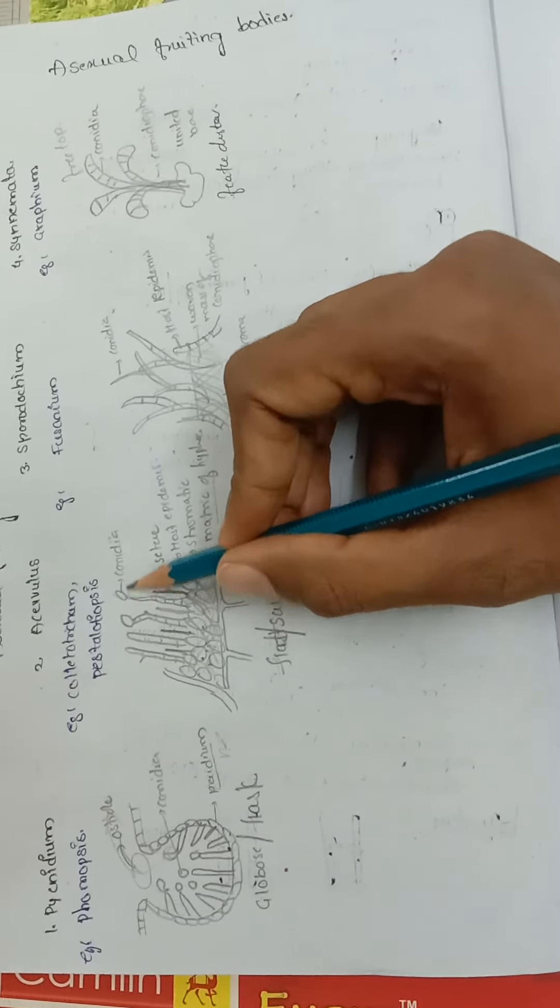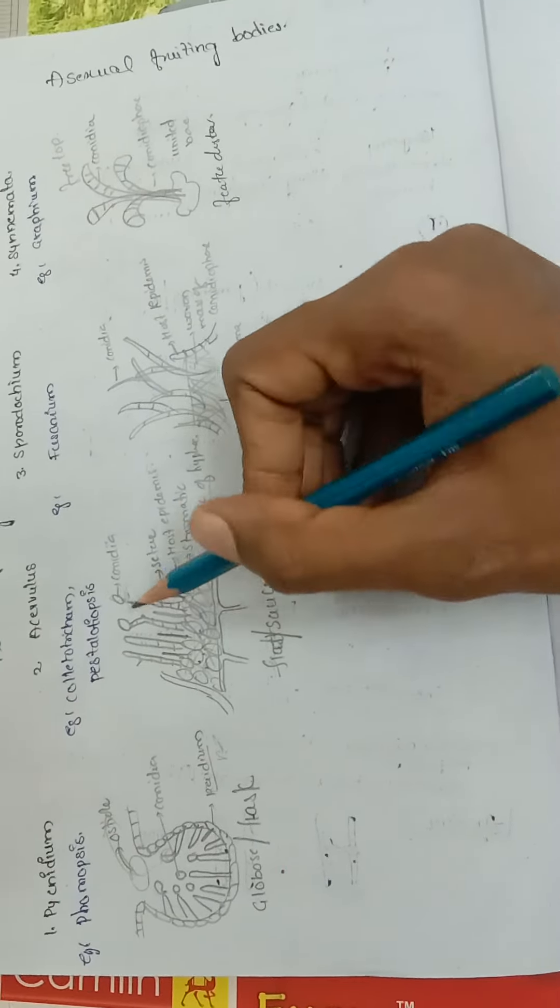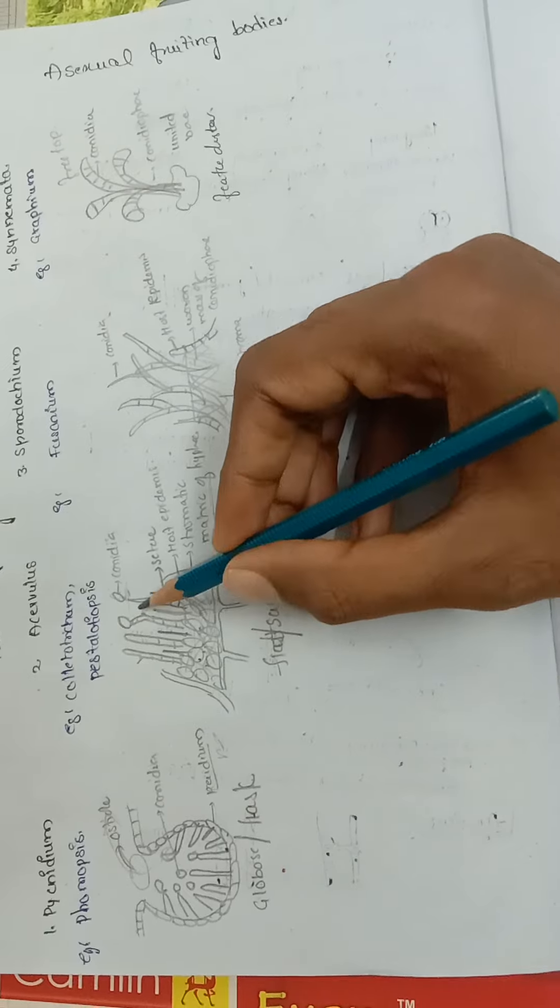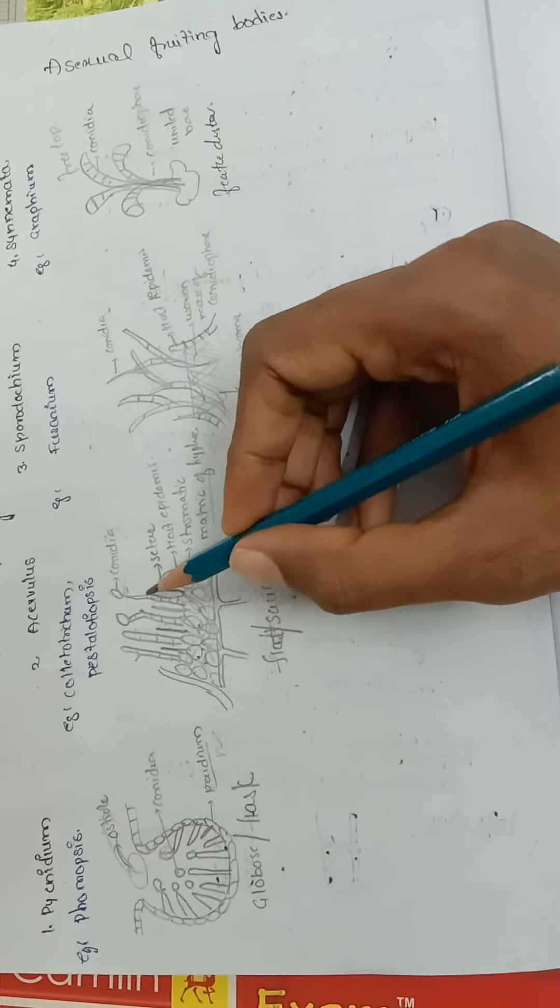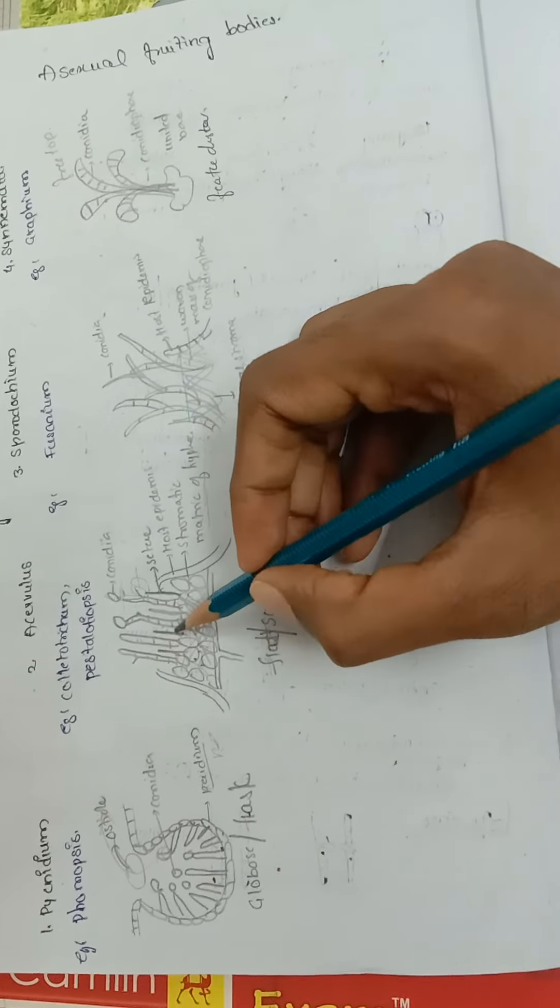When the conidia is detached from the conidiophore, it has a scar. Sometimes it is straight and sometimes it is curved due to the detachment of conidia and the continuous growth.